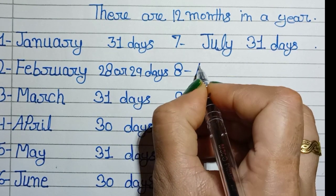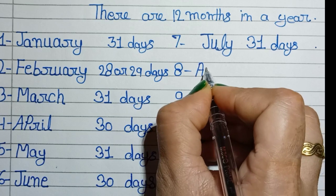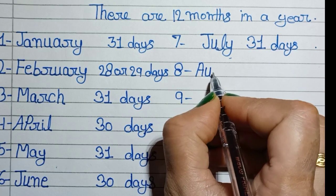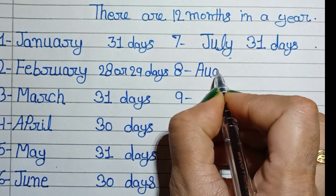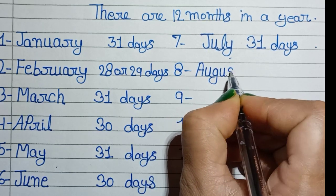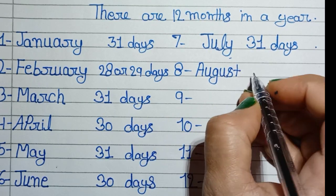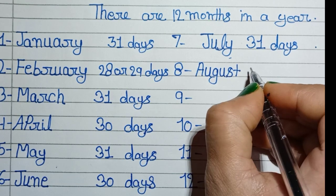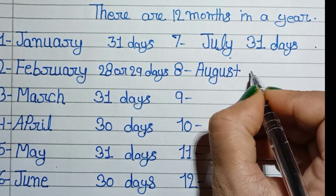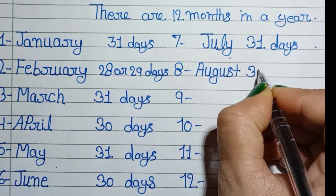August. A, U, G, U, S, T. August, 31 days.